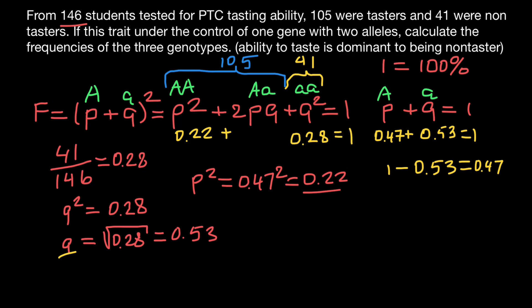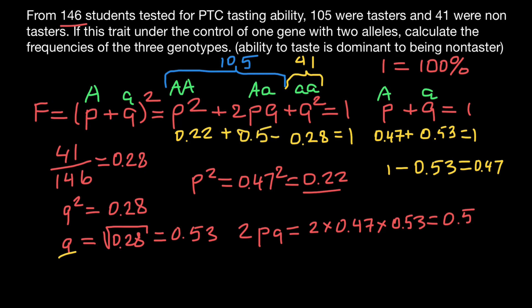We can find the heterozygous frequency using two methods: either subtract the other two frequencies from one, or use the formula directly. The frequency of the heterozygous genotype, 2pq, equals 2 multiplied by 0.47 multiplied by 0.53, giving us 0.50. When we add all three genotype frequencies, we get one, or 100 percent.